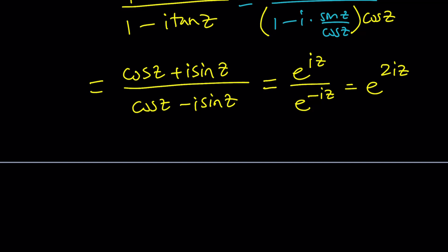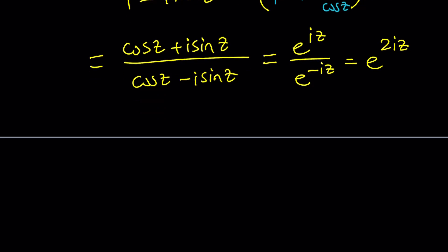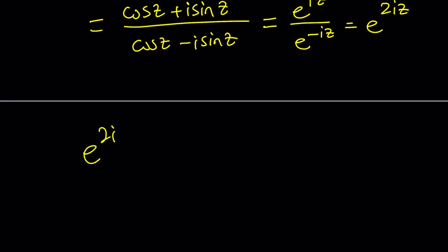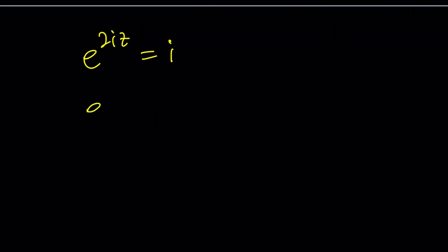Wait a minute. Is that the answer? No. This is equal to i. So let's go ahead and solve this interesting equation. e to the 2iz is equal to i. But guess what? You can write i in polar form, and then get an e at the base. Then you can compare the exponents. Easy. So how do you do that?